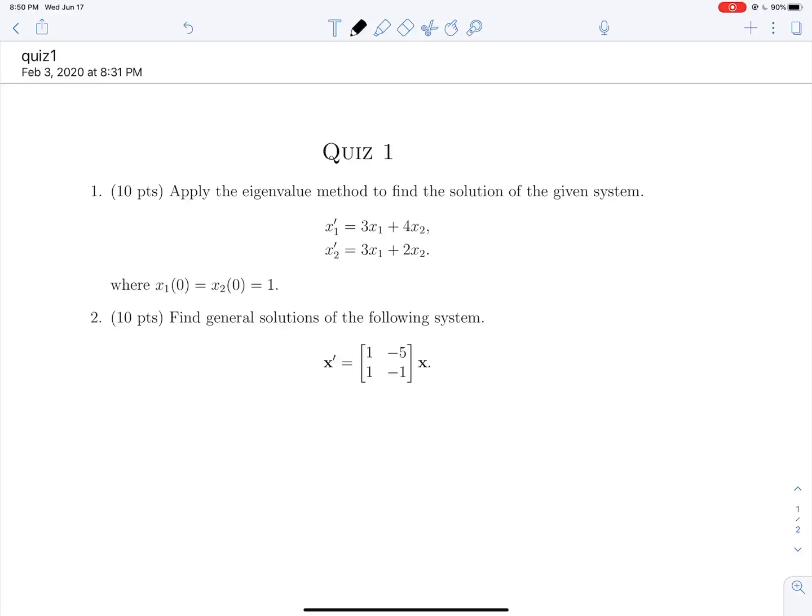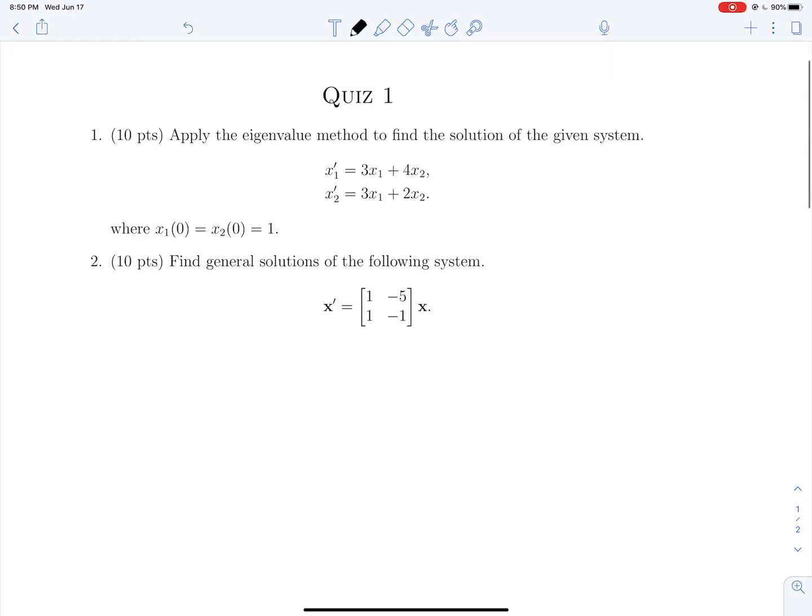Question one, we're just applying the eigenvalue method to find a solution to this given system with some initial conditions here. So the first thing we have to do is take this from system of equation form and turn into a matrix. Really, you just have to keep the shape the same, but replace your symbols a little bit.